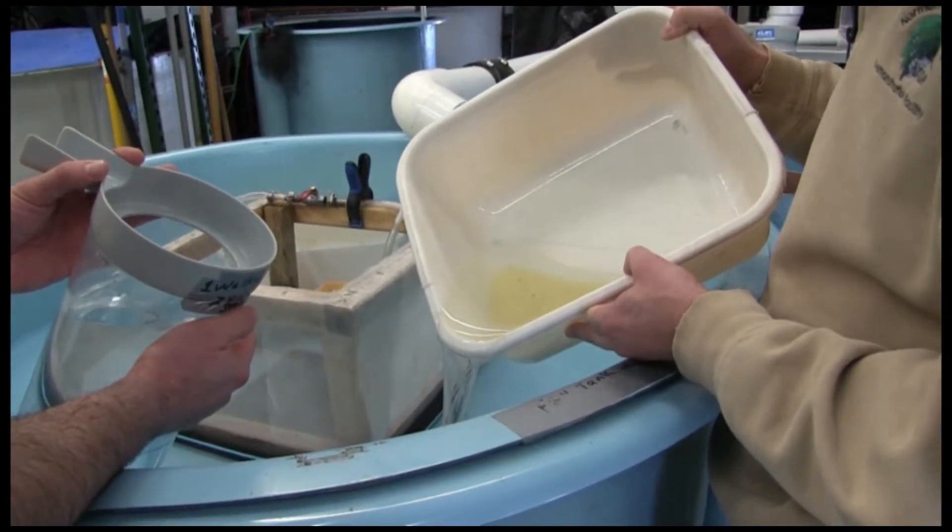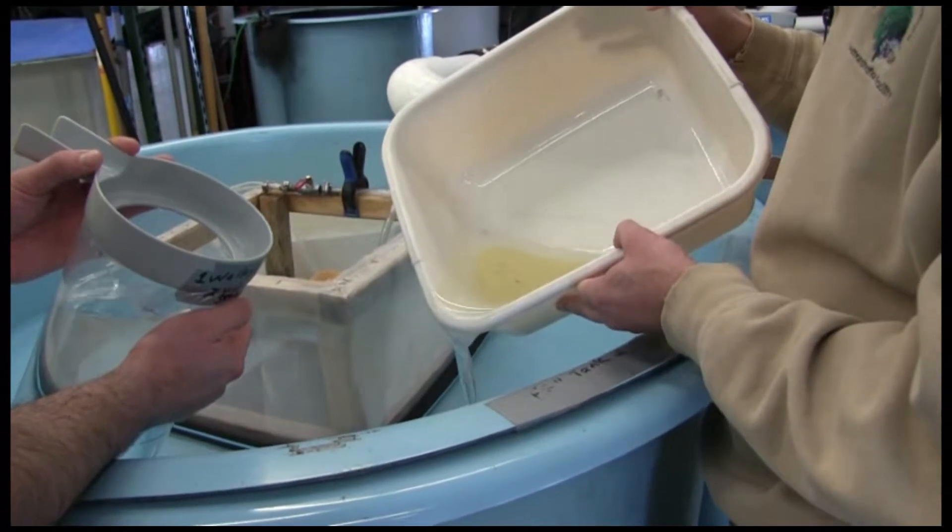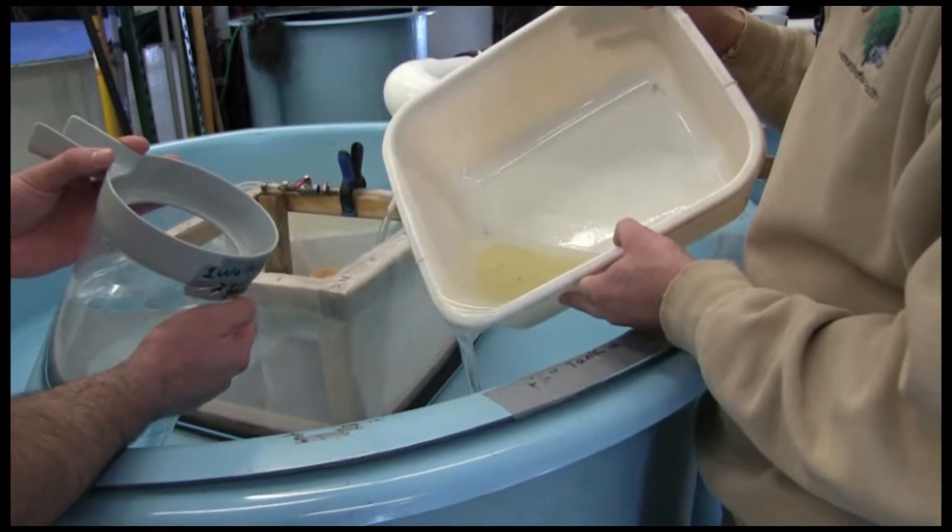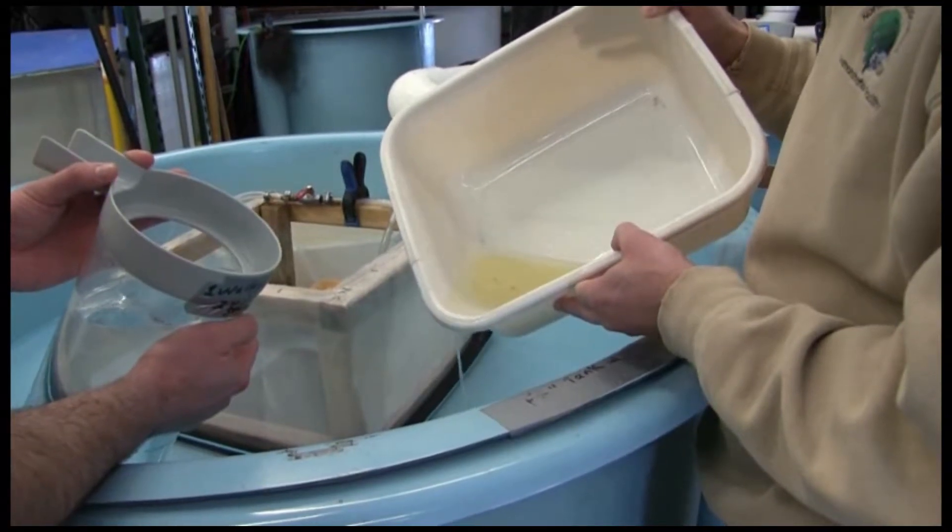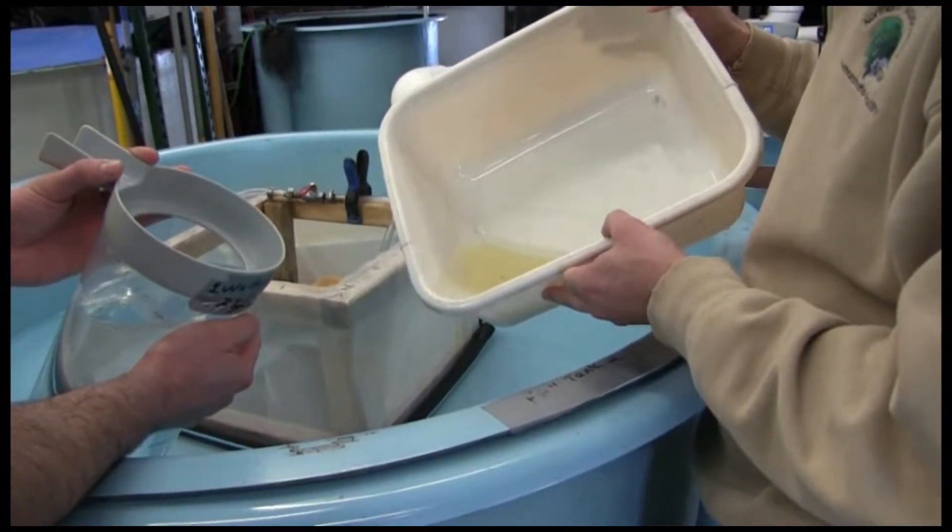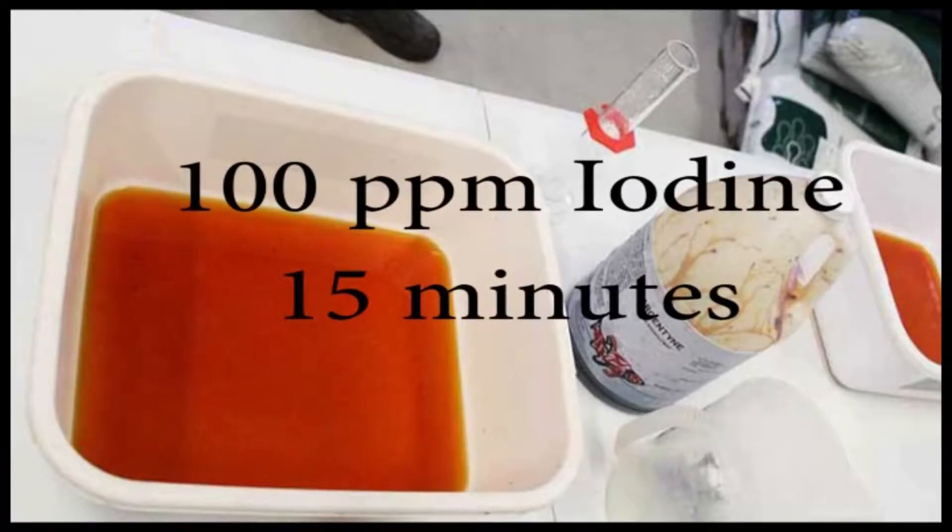After eggs are fertilized and water hardened, they are fully rinsed with fresh tempered water to remove the clay. Any dead eggs which are buoyant and white in color can also be removed at this time by simply pouring them out carefully. Eggs can be disinfected with 100 parts per million iodine for 15 minutes and rinsed with fresh tempered water.